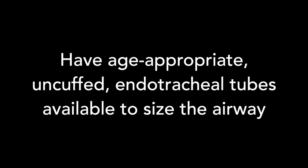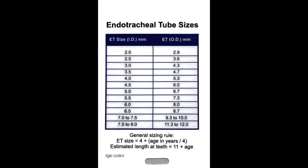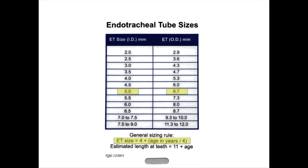During the airway evaluation, you must size the airway to make sure that it is appropriate for the age of the patient. In order to do this, using an airway card that has the normal values for different size endotracheal tubes is handy. There is a formula for determining the appropriate size endotracheal tube for the age of a patient, and this formula can be used to pick the correct endotracheal tube and size the airway.